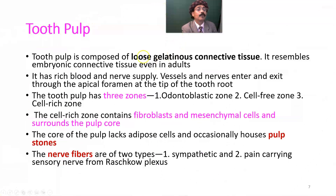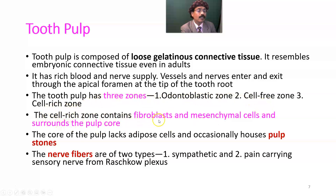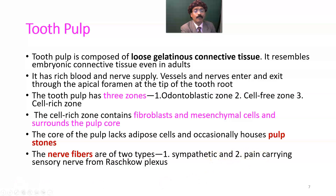Tooth pulp is composed of loose, gelatinous connective tissue. It resembles embryonic connective tissue even in adults. It has a rich blood and nerve supply and also contains some lymphatics. Vessels and nerves enter and exit through the apical foramen at the tip of the tooth root. Tooth pulp has three zones: the odontoblastic zone, cell-free zone, and cell-rich zone. The cell-rich zone contains fibroblasts and mesenchymal cells and surrounds the pulp core, which occasionally houses pulp stones due to calcification. Nerve fibers are of two types: sympathetic and pain-carrying sensory fibers of the Raschkow plexus.